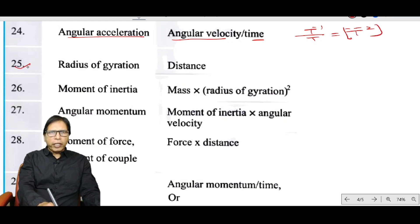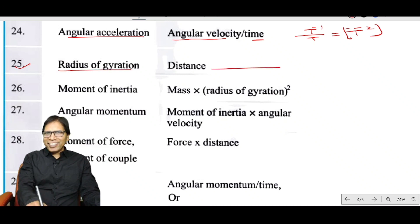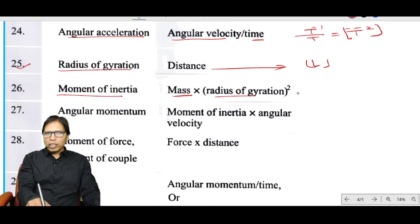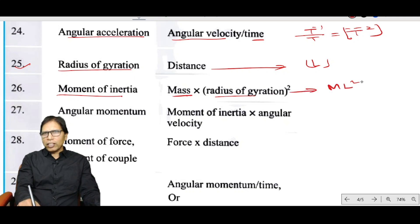The radius of gyration is a distance, so its dimension is L. Moment of inertia equals mass × (radius of gyration)², giving dimension ML².